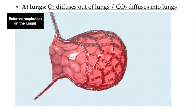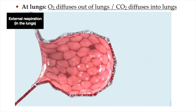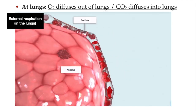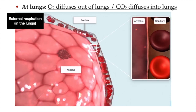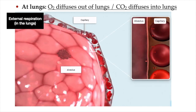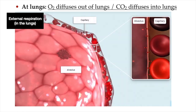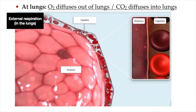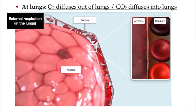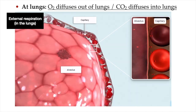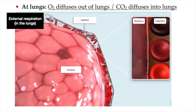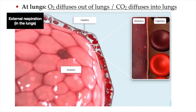As you can see in this animation, inhaled oxygen moves from the alveoli, where it is in higher concentration, to the blood in the capillaries, where it is in lower concentration. And carbon dioxide gas moves from the blood in the capillaries, where it is in higher concentration, to the air in the alveoli, where it is in lower concentration.